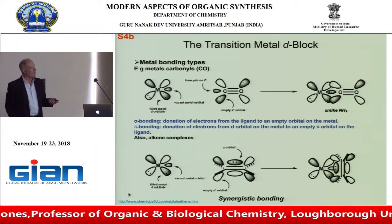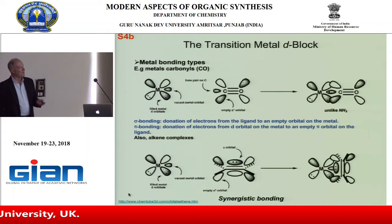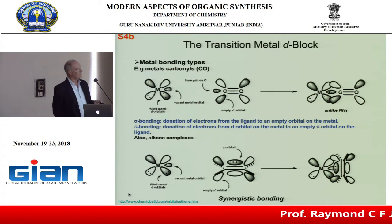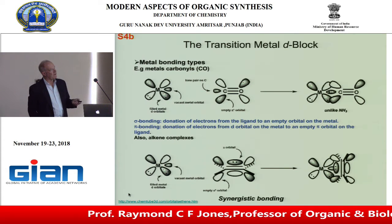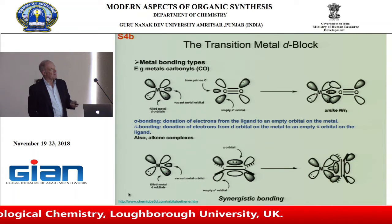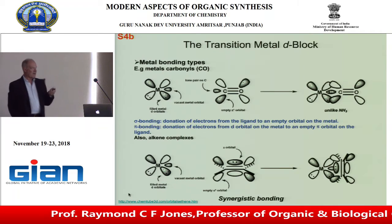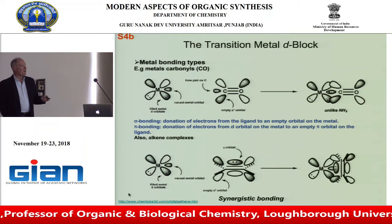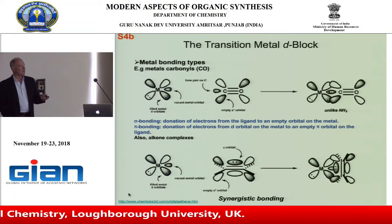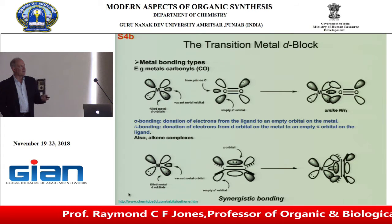That maps onto complexation with a filled d orbital and an empty orbital on the metal. You have sigma-type overlap between the filled lone pair on CO and an empty orbital on the metal, and then the filled d orbitals on the metal interact with the empty π* orbitals on the CO. So: sigma bonding is donation of electrons from the ligand to an empty orbital on the metal, and π bonding is donation from the d orbital on the metal to the empty π* orbital on the ligand.